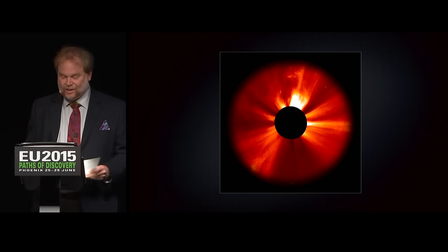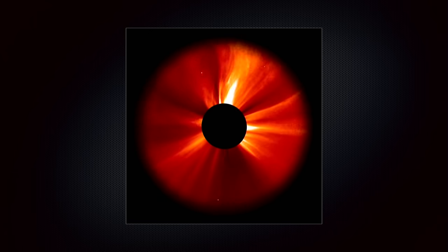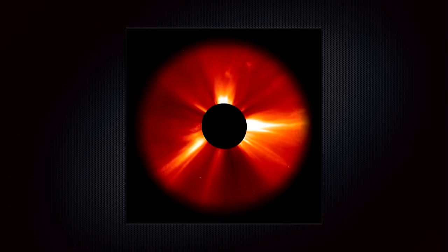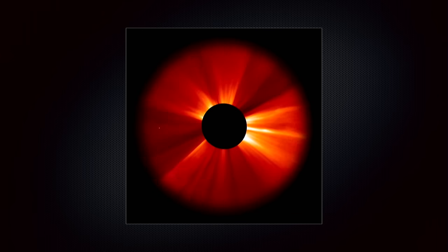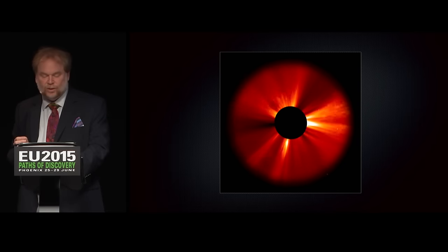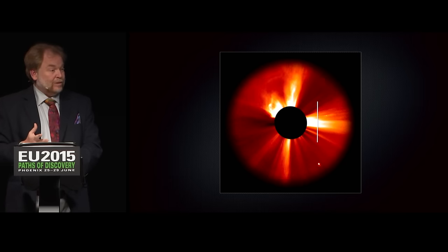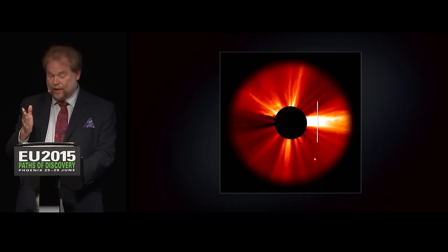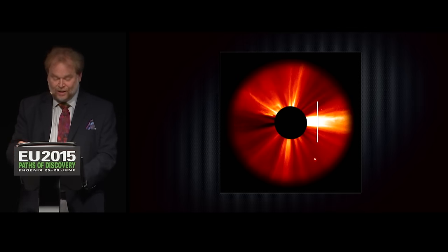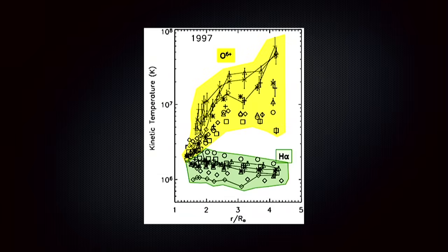Moving on to the next item: coronal streamers. Here is a movie of SOHO ultraviolet data — the sun is in the center, and these are coronal streamers flying off. People at the Catania Observatory in Italy — Ventura and Spadaro — looked at these coronal streamers and wanted to examine how the temperature varies inside them. They found some pretty strange results. Using line width as a measure of temperature, they found it depends upon what element you're looking at. The upper data points are all from oxygen atoms inside the streamer — as you move away from the sun, those oxygen atoms get hotter and hotter. But hydrogen is 100 times colder on this logarithmic plot, and it gets cooler as you move away from the sun.